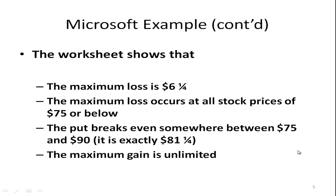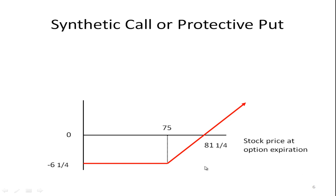Here's a summary of what we just covered — let's take a look at the payoff diagram. From the table we saw you won't lose more than 6 and a quarter. If you owned the stock alone, you could lose as much as the price of the stock. For every dollar the price goes above 75, you make a dollar. Once you get to 81 and a quarter — that's 75 plus the cost of the position — you break even, and for any price above that you're making a profit. You'll notice this looks exactly like a call option. You've created a call option without actually buying a call.